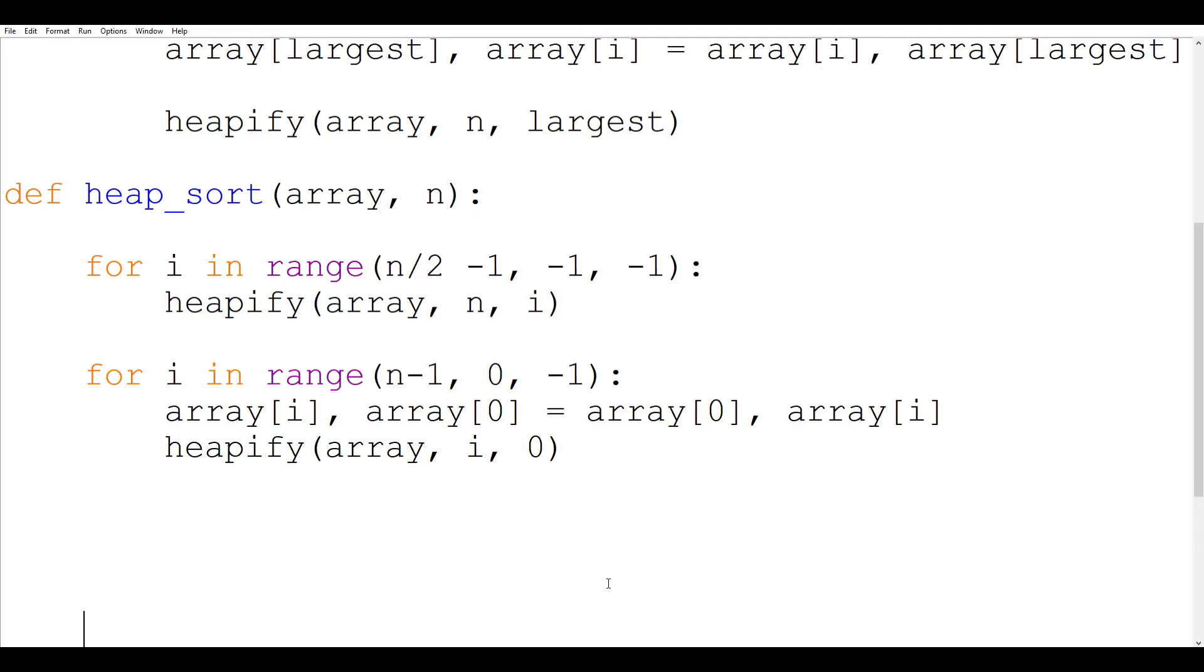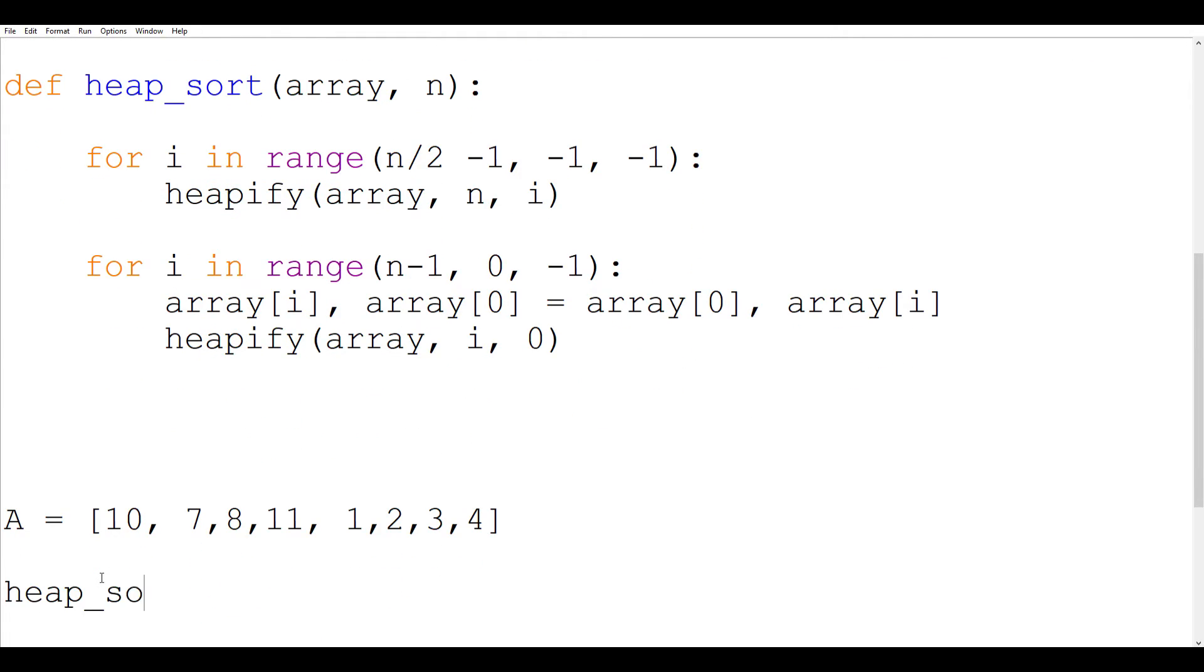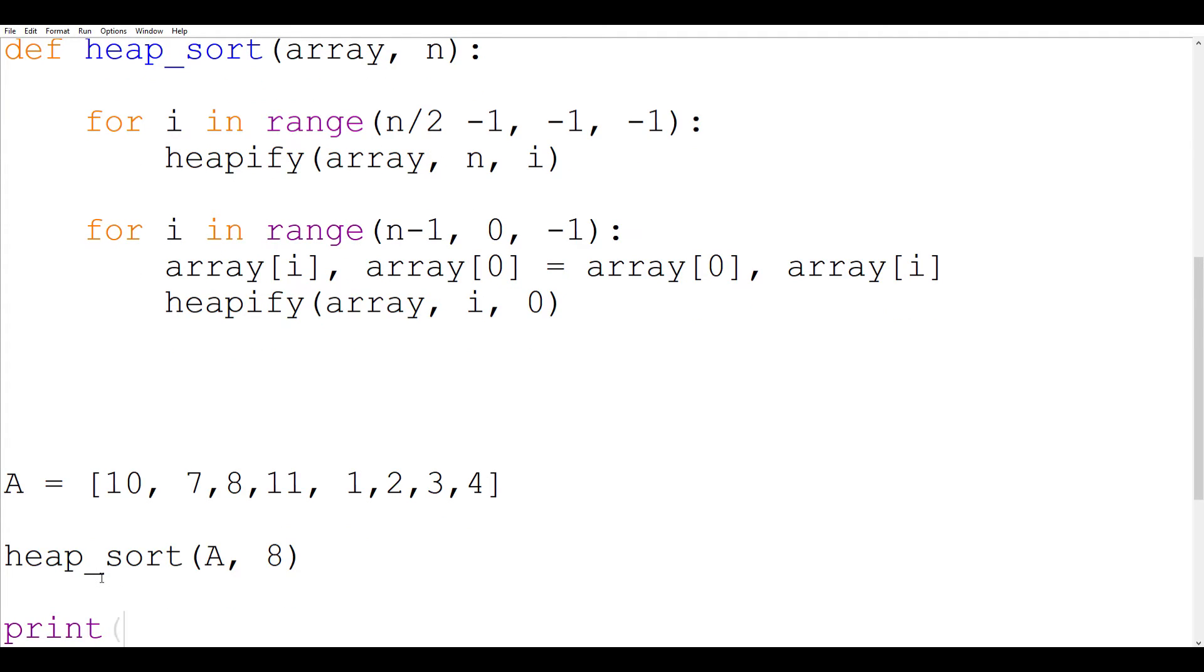So now that has completed our heap sort function and all that we need to do now is give a test array and call the heap sort function. So let me give this array 10 7 8 11 1 2 3 4. So this is my list and heap sort this list, so A and the length of this is 8. And we are going to print the sorted list in the end. So that's it.